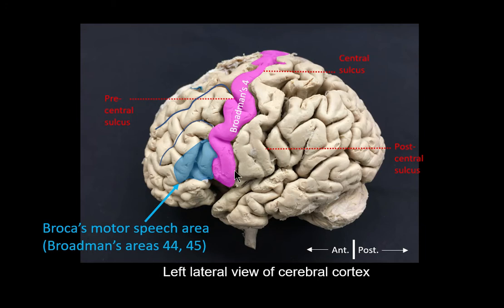Just to let you know, this demarcation between the motor and sensory areas of the brain is sometimes misleading. The motor and sensory areas really work in coordination with each other, so even sensory stimulation of the sensory areas has some kind of motor activity associated with it. But we're going to stick to that simple generalization of dividing the brain into motor and sensory areas.